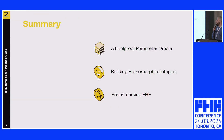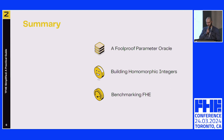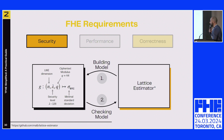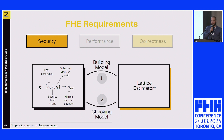We have three parts: making the oracle reliable, building integers over it, and benchmarks. For security, which is the easier one: to verify the oracle, we use another oracle we trust—the lattice estimator. We get many samples to build a security model as a function taking as input the LWE dimension, the ciphertext modulus, and the desired security level.